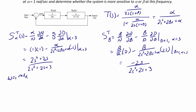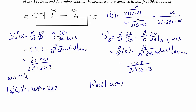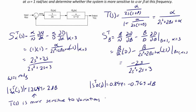Now let's determine the sensitivity at omega equal to 1 radian per second by finding the magnitude of each sensitivity function. The sensitivity function for alpha at 1 radian per second is equal to 1.2649, or 2 decibels. The sensitivity function for beta at 1 radian per second is 0.894, or negative 0.969 decibels. Therefore, T(S) is more sensitive to variations in alpha at 1 radian per second.